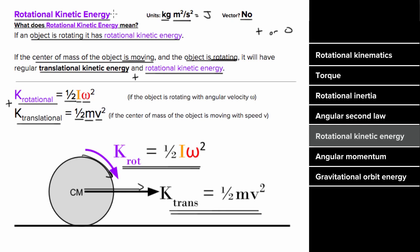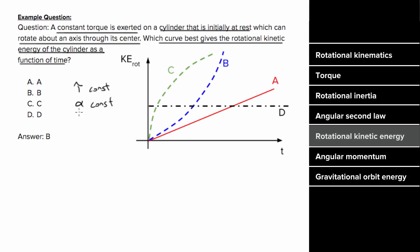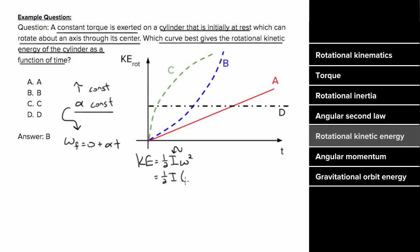Example: a constant torque is exerted on a cylinder initially at rest that can rotate about an axis through its center. Which curve best shows rotational kinetic energy as a function of time? A constant torque causes constant angular acceleration α. Starting from rest, ω = αt. So KE_rot = (1/2)Iω² = (1/2)I(αt)² = (1/2)Iα²t², which is proportional to t². Graphing kinetic energy versus time gives a parabola — the correct answer is B.